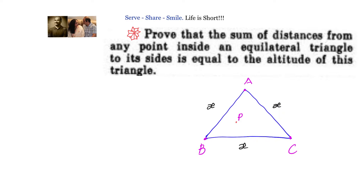Prove that the sum of distances from any point inside an equilateral triangle to its sides is equal to the altitude of this triangle. Let us take an equilateral triangle ABC of side x units. Let us say P is a point inside the triangle. We have to prove that the sum of distances from P to AB, BC, and AC is equal to the altitude of the equilateral triangle.